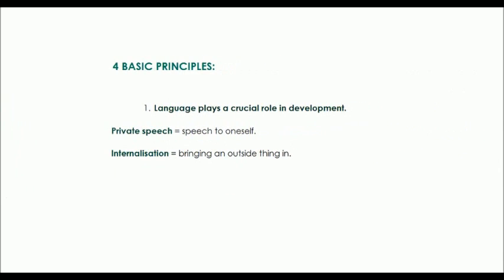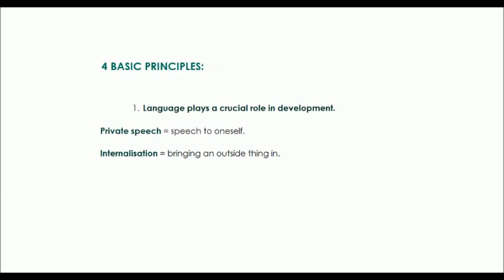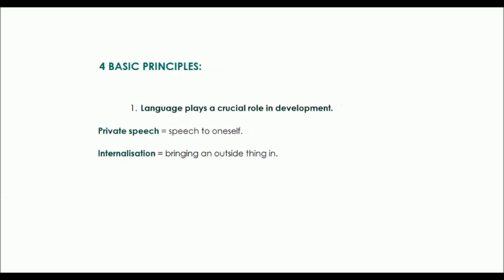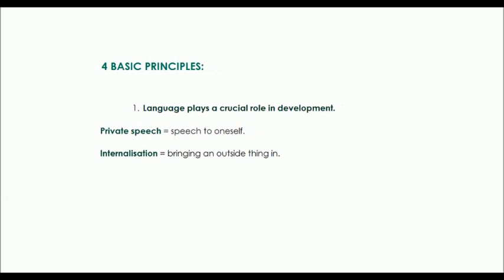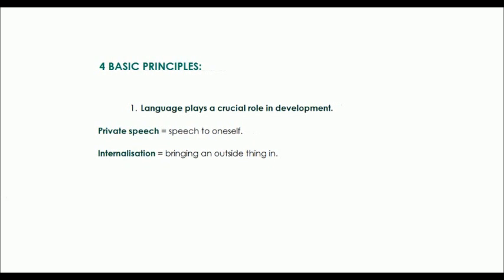There are four basic principles underlying Vygotsky's theory. The first is that language plays a crucial role in development. He focused on private speech and internalization. Private speech is speech to oneself — children talk aloud to themselves and this guides thinking. They plan actions, and this helps them accomplish tasks. It becomes inner speech over time, and children learn to differentiate between speech for other people and speech for themselves.